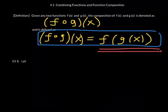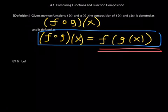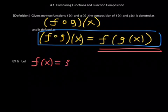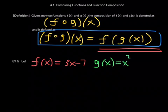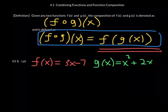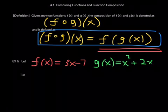This is example number six, the first example we look at for function composition. Let f of x be equal to 3x minus 7, and g of x be equal to x squared plus 2x. These two functions are given to you. What they want you to find is the following.